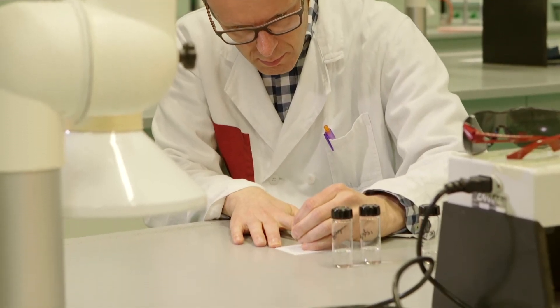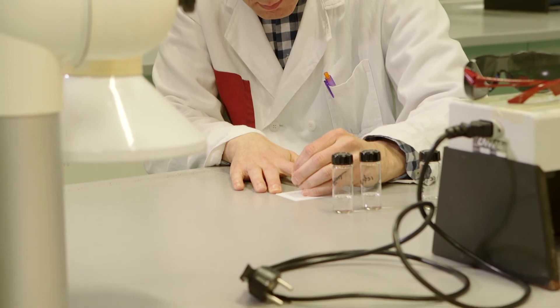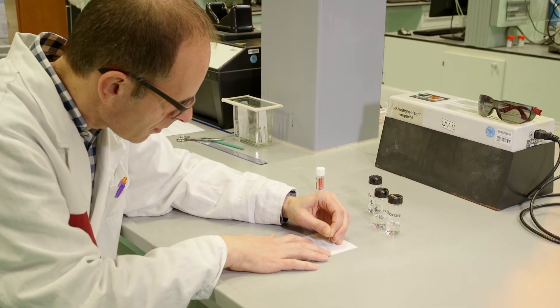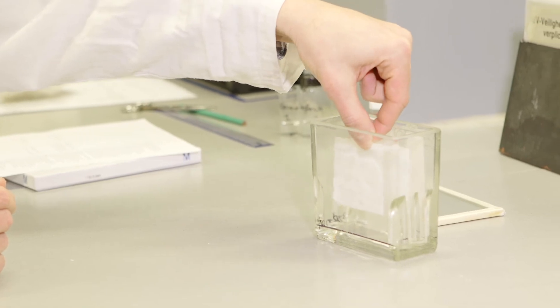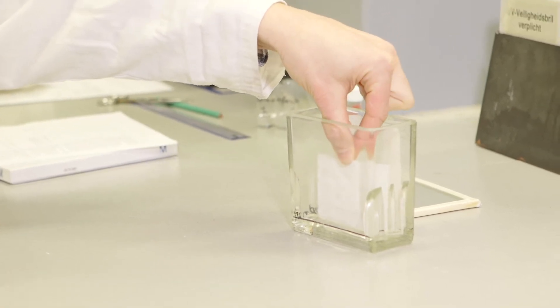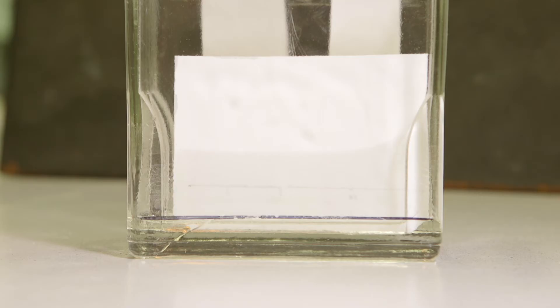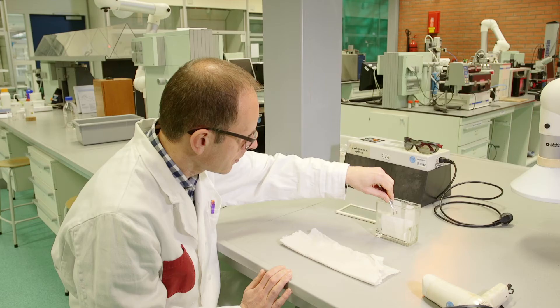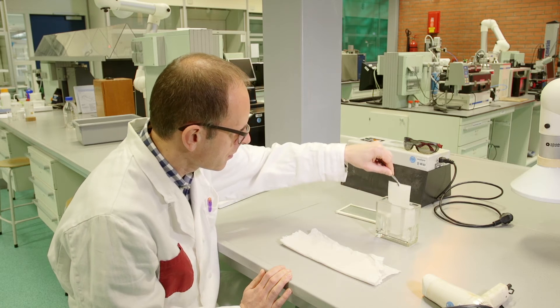The distance between the substances should be about one centimeter. Do not draw the dots too close to the sides. The TLC plate is carefully placed in the tank. When the solvent reaches to one centimeter under the top edge, the plate is removed with a pair of tweezers from the tank.